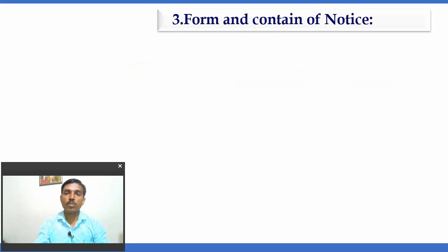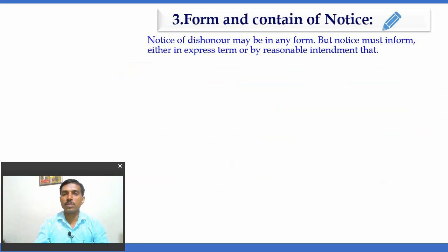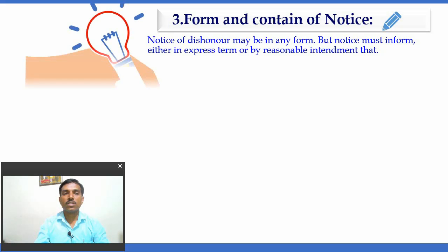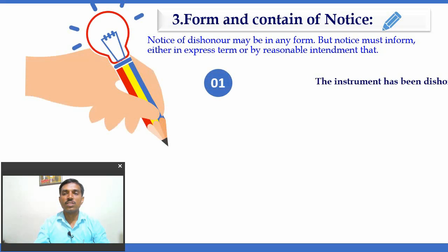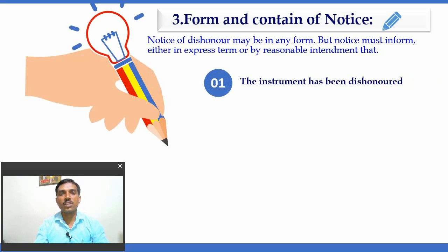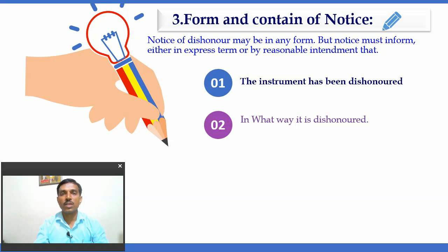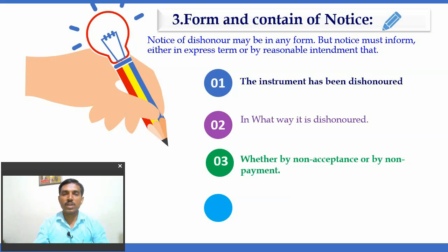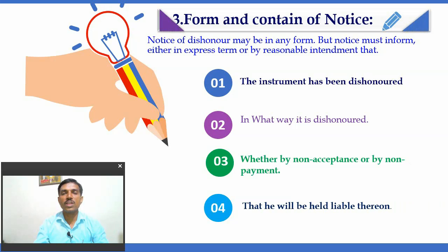The form and content of the notice: the notice of dishonor may be in any form, but it must inform the party either in express terms or by reasonable intendment of the important facts. The notice must inform the party that their instrument has been dishonored, in what way it has been dishonored — such as insufficient balance in the account, wrongful signature, or other reasons — and whether the dishonor is by non-acceptance or non-payment. It must also state who will be held liable for the dishonor. This content is necessary in a notice of dishonor.